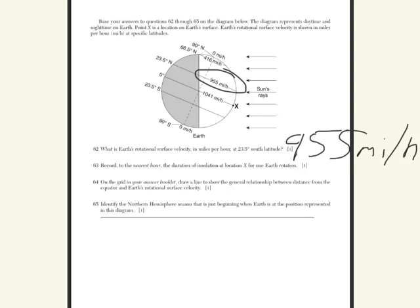Now the next question asks us to record to the nearest hour the duration of insolation at location x for one earth rotation. Location x is on the equator, and you see the point right here, light to dark, it crosses the equator right in the middle, and since there's 24 hours in one earth rotation, you divide that by two and you're going to get 12 hours.